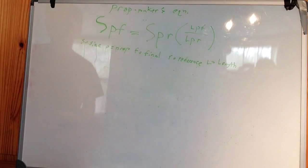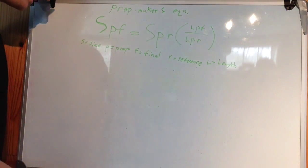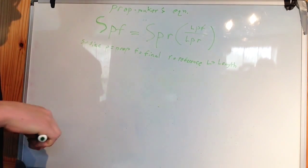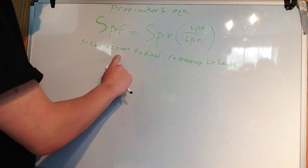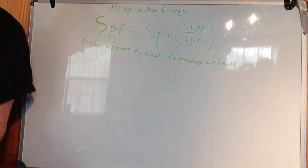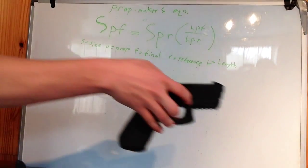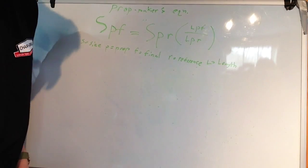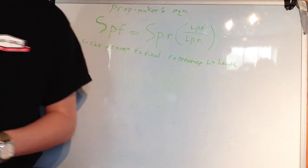You see a bunch of letters up here and they mean nothing to you right now. S of PF equals S of PR times L of PF divided by L of PR. What does this mean? Well, S equals size. In all this, P is a prop. F is the final, the final prop, what you want at the end of the day. R is the reference, so a picture of a prop. And L is the length, the length of the whole gun.